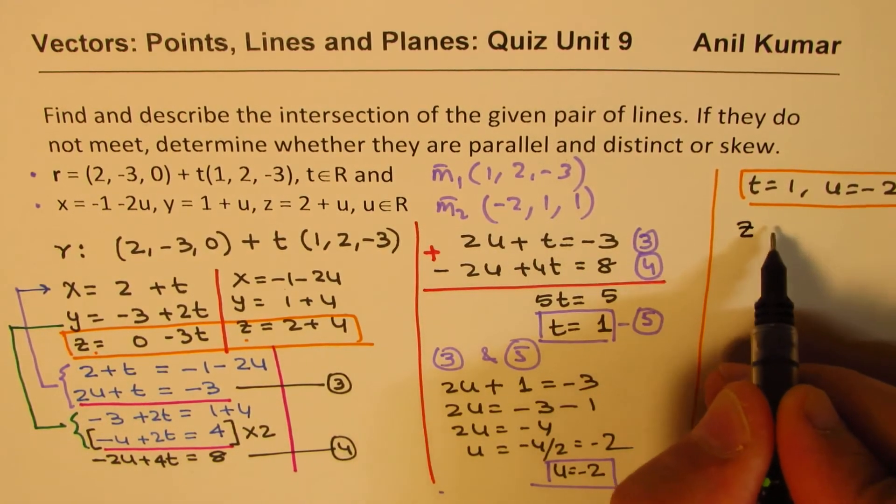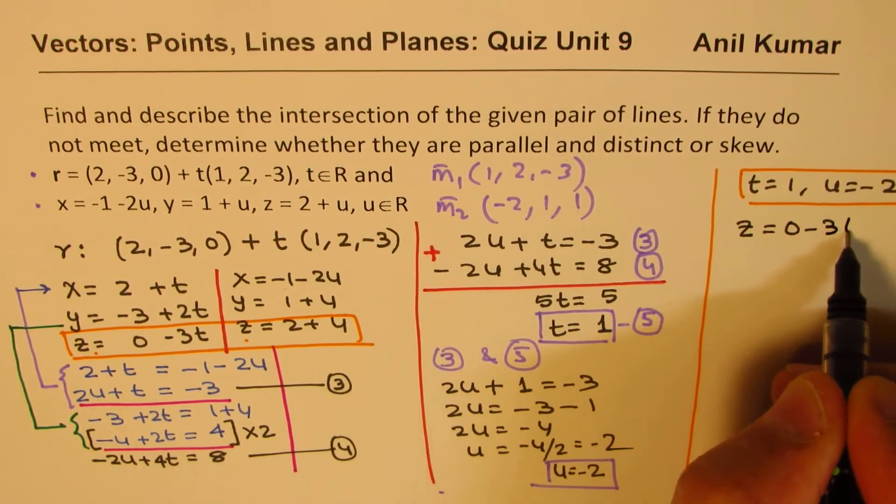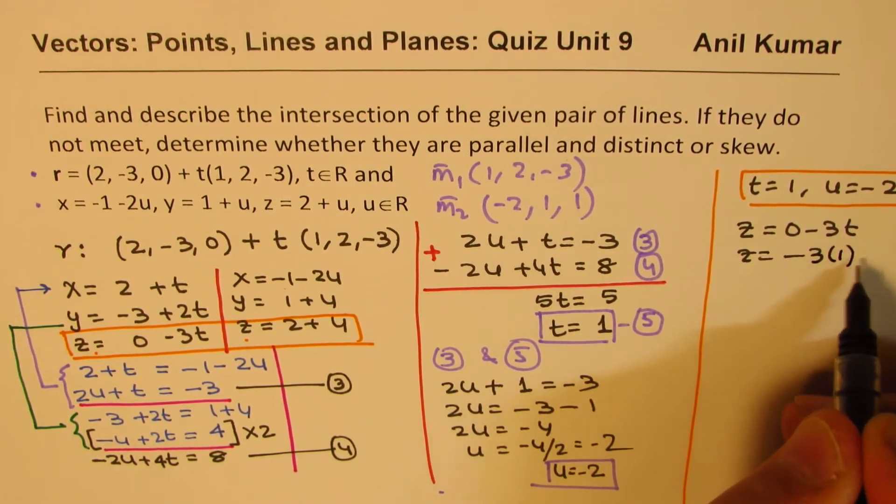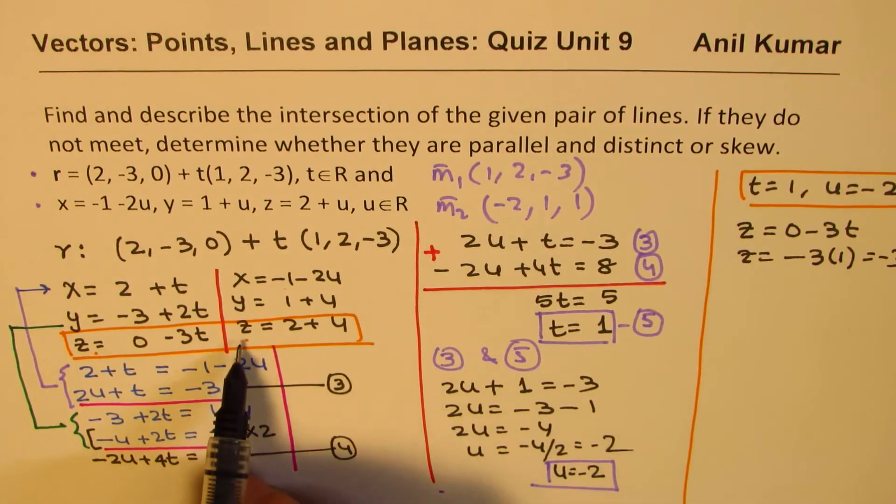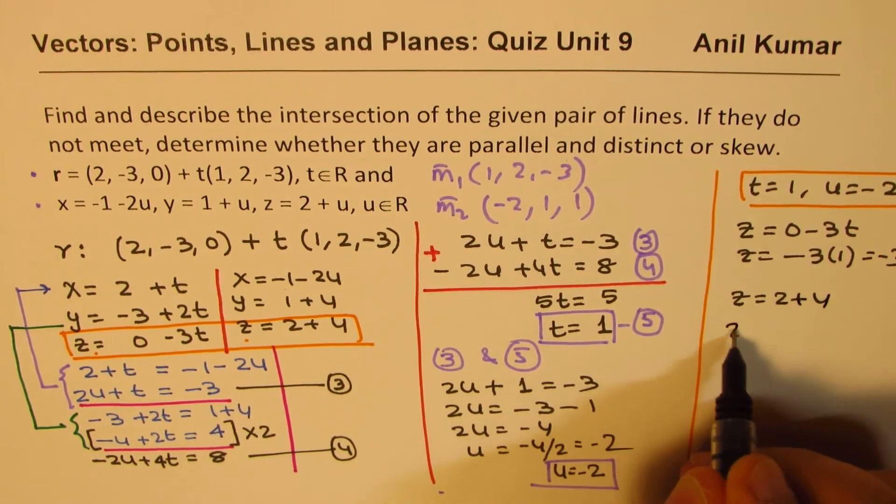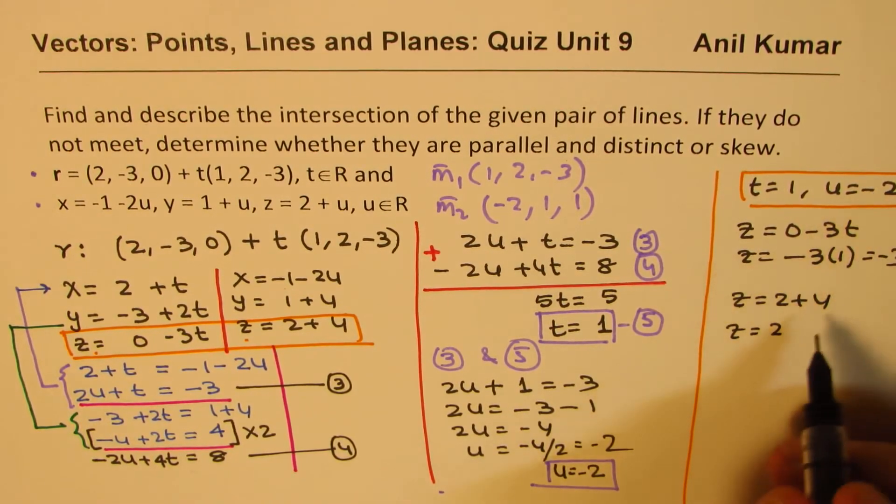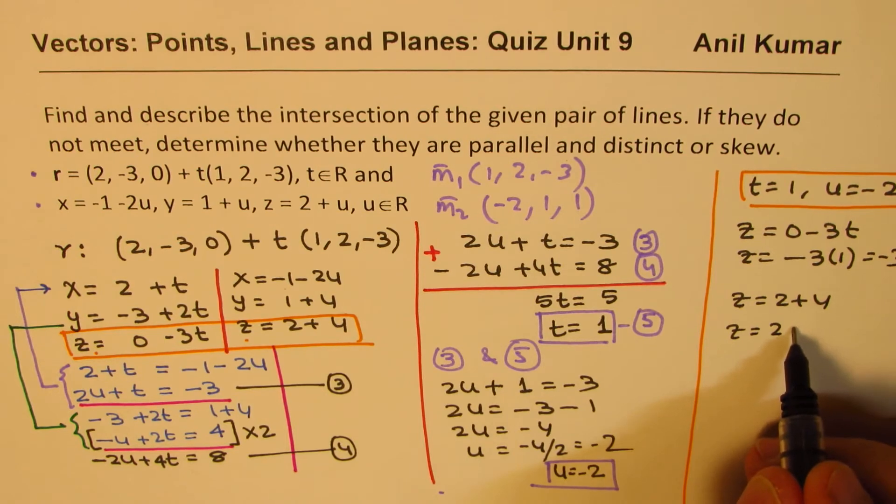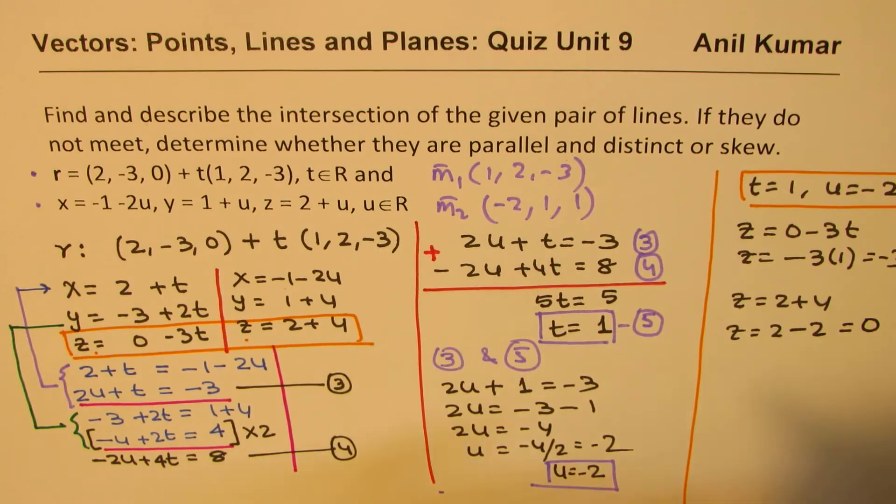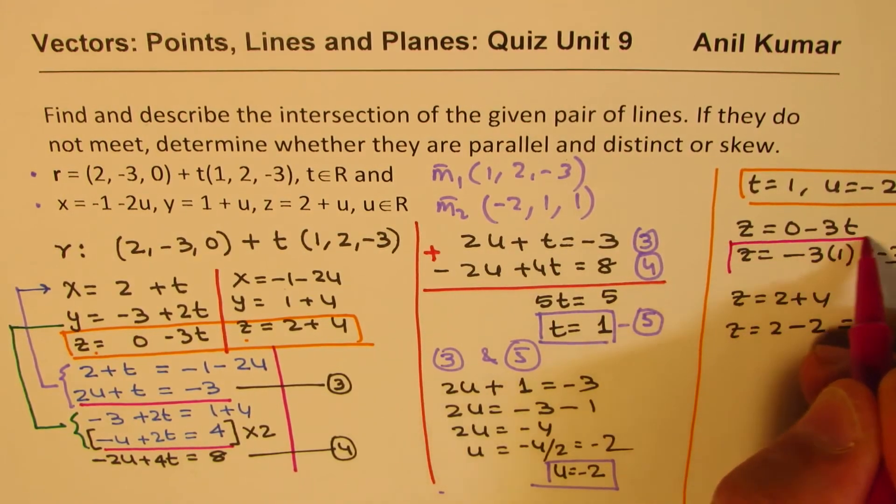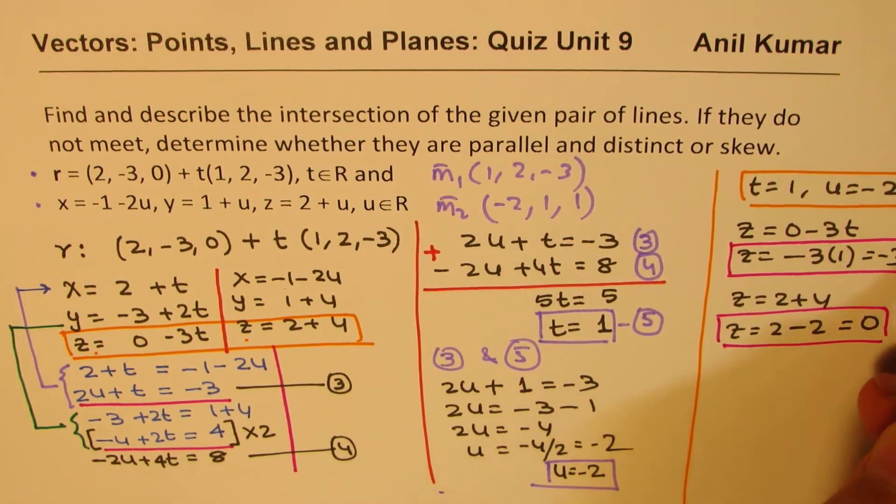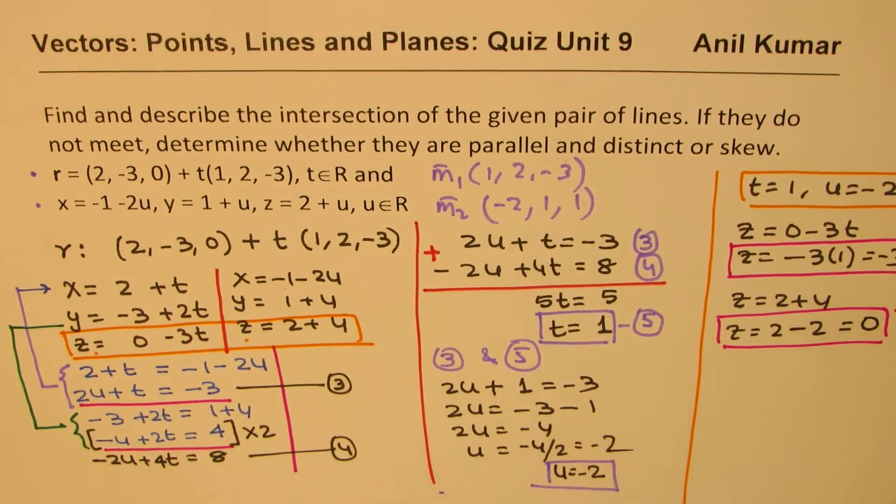So the first one is Z = 0 - 3t. So if I substitute 1 here, I get -3 times 1, which is -3. The second one here is Z = 2 + U, that means 2, U value is -2. So instead of U, if I write -2, I get 0. Now, as you can clearly see that the Z value of -3 and Z value of 0 do not match. So that is not equal.